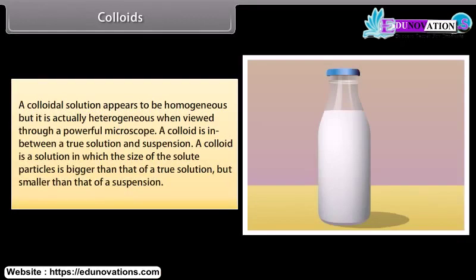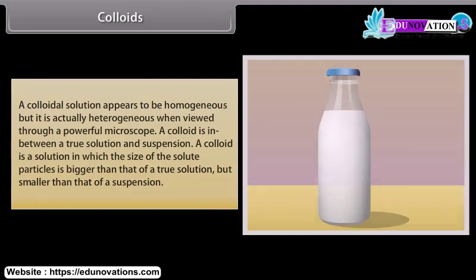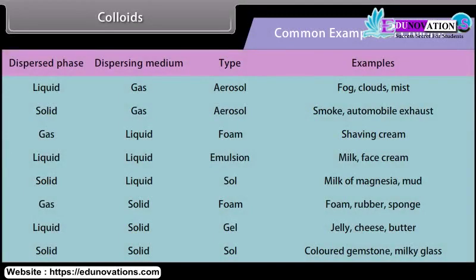A colloidal solution appears to be homogeneous, but it is actually heterogeneous when viewed through a powerful microscope. A colloid is in between a true solution and a suspension — it is a solution in which the size of the solute particles is bigger than that of a true solution, but smaller than that of a suspension. Some common examples of colloids are milk and starch solutions.